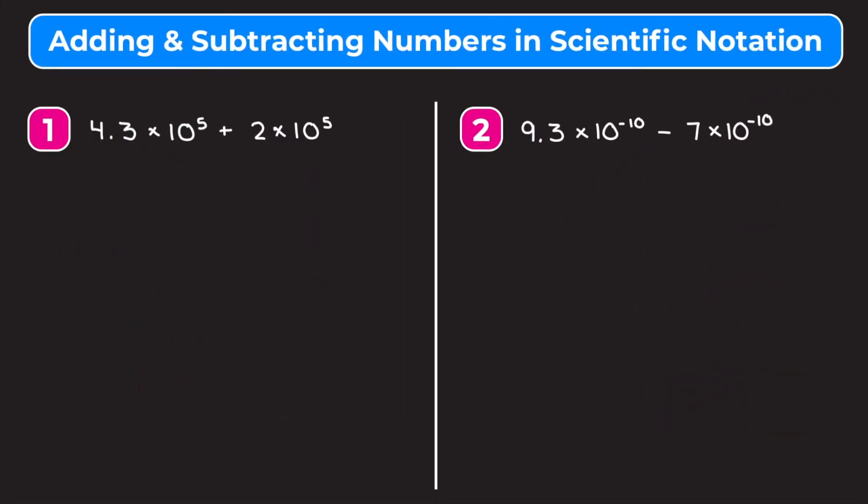In this video we're learning how to add and subtract numbers that are written in scientific notation. So if we take a look at example 1, we have 4.3 times 10 to the fifth plus 2 times 10 to the fifth.